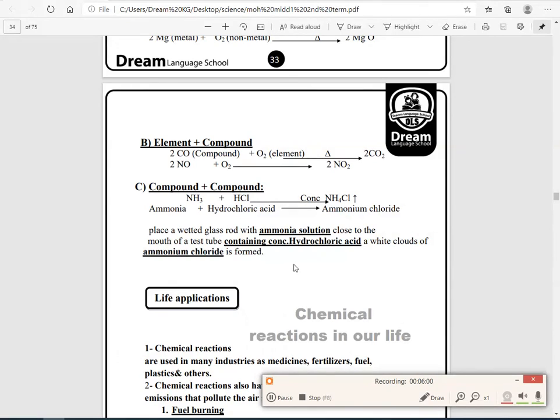Compound plus compound: we will add 2 compounds to give us another new compound. Ammonia plus hydrochloric acid gives us ammonium chloride. NH3 plus HCl, concentrated HCl, will give us NH4Cl. You have to know that if we wet a glass rod with ammonia close to the mouth of a test tube containing concentrated hydrochloric acid, white clouds of ammonium chloride is formed.